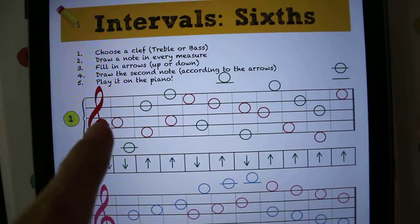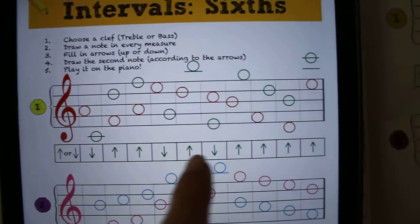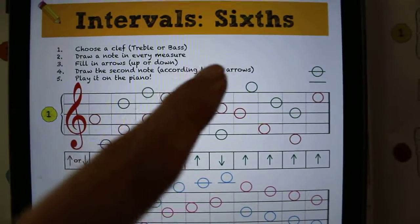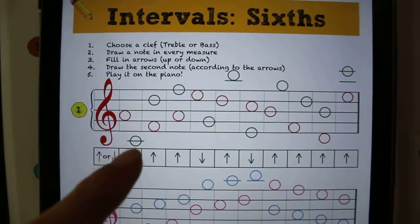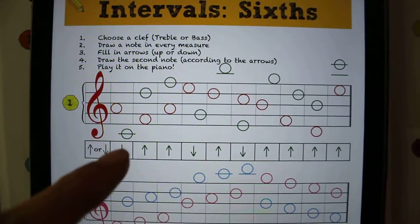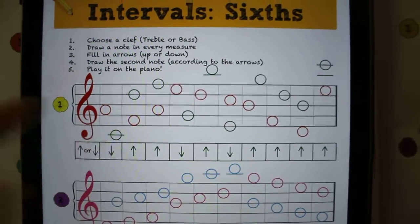Okay, so see how I started with red, got all my red notes, and then we have our green arrows, and all those second notes are going to be written according to the arrows. So right now I wrote down, so you need to go down a 6.